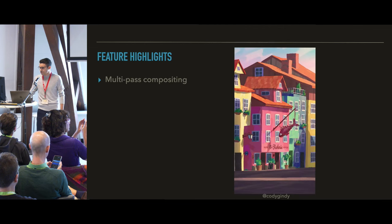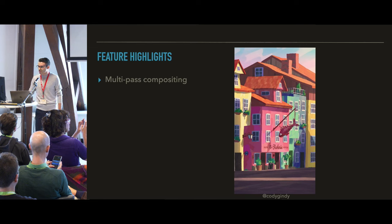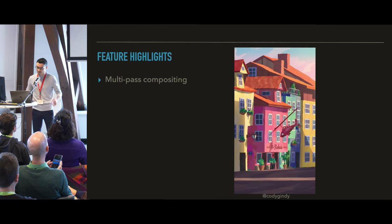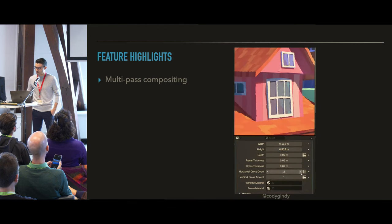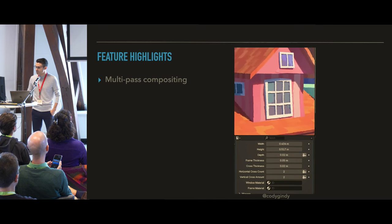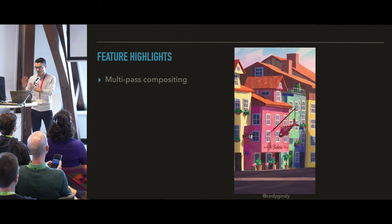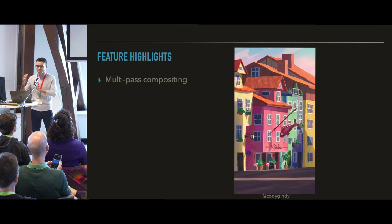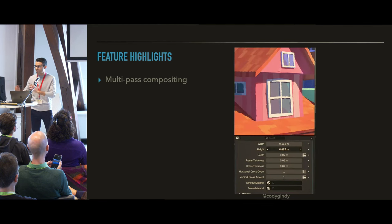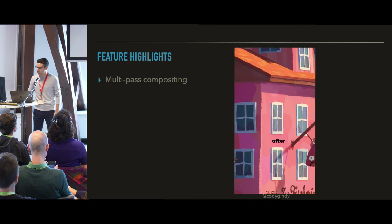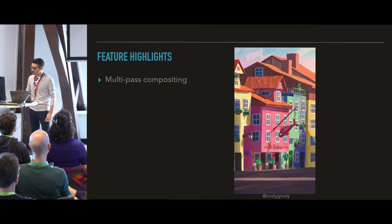The second cool feature I would like to highlight is very recent — this will be in the latest Blender version — which is multi-pass compositing. This will allow us to do more cool effects like the roughening of the edges here, even if the edges are on a non-flat surface and even if the camera is rotating. That's the before and after, and that's pretty cool stuff.